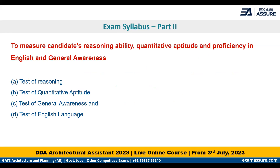Coming to Part 2, as clearly defined, it covers reasoning, quantitative aptitude, general awareness, and English language. There are 40 questions — 10 questions for each of these four areas. This is a consistent trend seen in previous year papers. Do not ignore these 40 marks, as reasoning and aptitude can be a game changer and give you a good lead in your score, potentially helping you secure a seat.